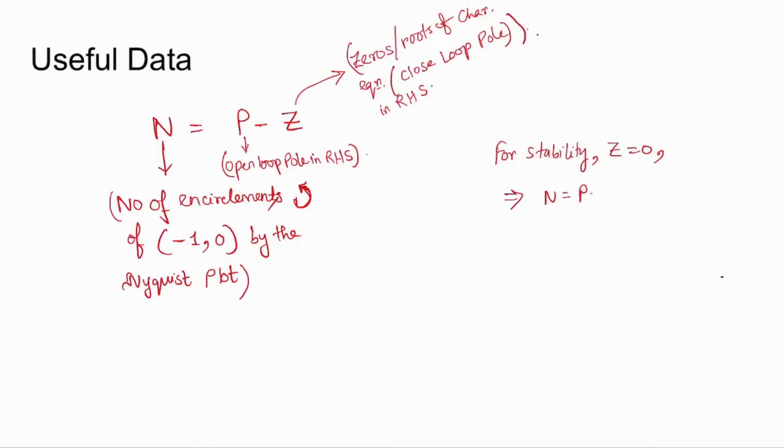P is the open loop poles on the right hand side of the s-plane, and Z is the number of zeros of the characteristic equation, or the roots of the characteristic equation, which indicates the closed loop poles in the right hand side of the s-plane.